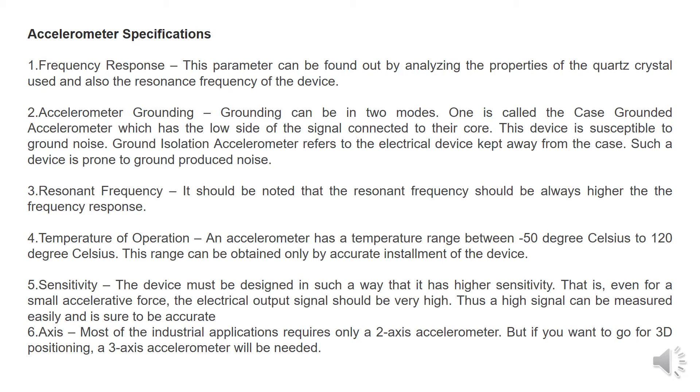Second specification is accelerometer grounding. Grounding can be in two modes. One is called the case grounded accelerometer which has the low side of the signal connected to the core. Therefore, this device is susceptible to ground noise. Ground isolation accelerometer refers to the electrical device kept away from the case. Such a device is prone to ground produced noise.